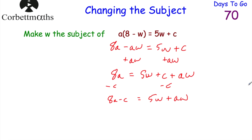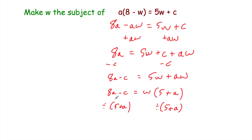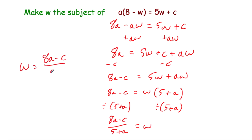Now factorise the right-hand side by taking W out: 8A − C = W(5 + A). Then divide both sides by (5 + A) to get W on its own. On the left we have (8A − C) / (5 + A), and on the right just W. So W = (8A − C) / (5 + A).